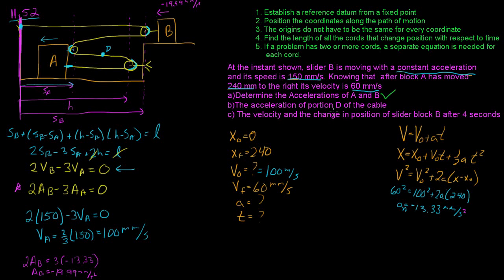Part B asks for the acceleration of portion D of the cable, which is located here on the diagram. To find the acceleration of a portion of a cable, we cut the cable at that point and trace the rope from point D to one end, writing a new length equation starting at D.